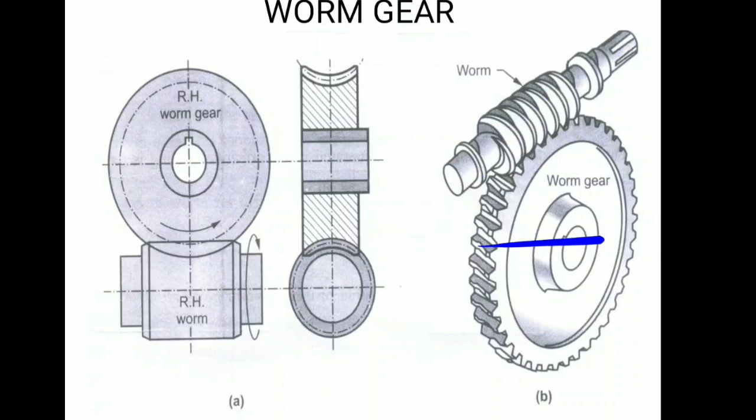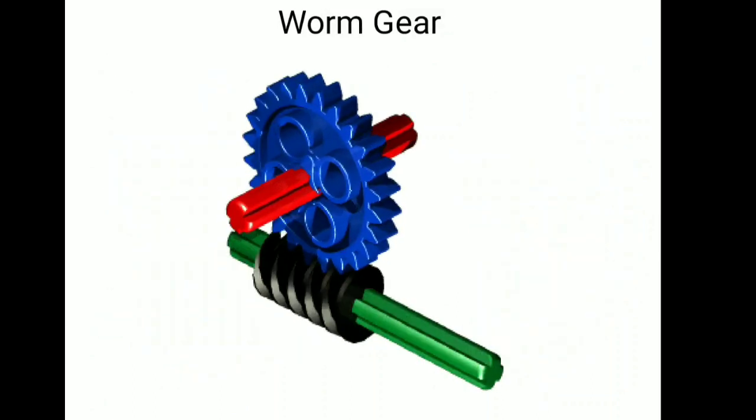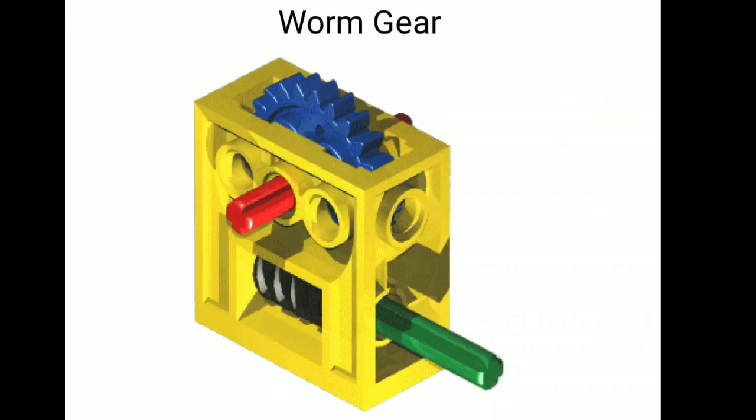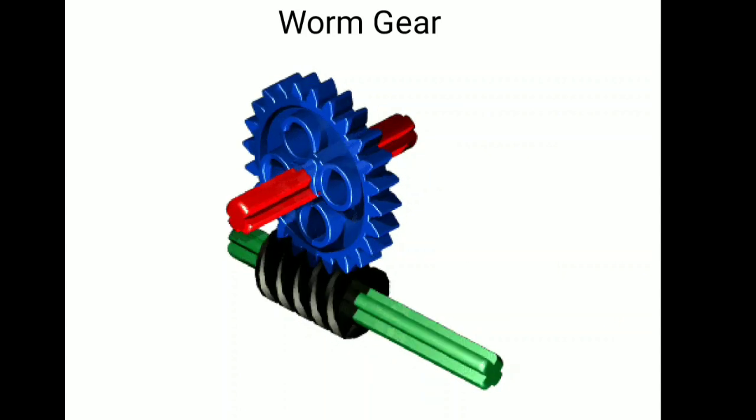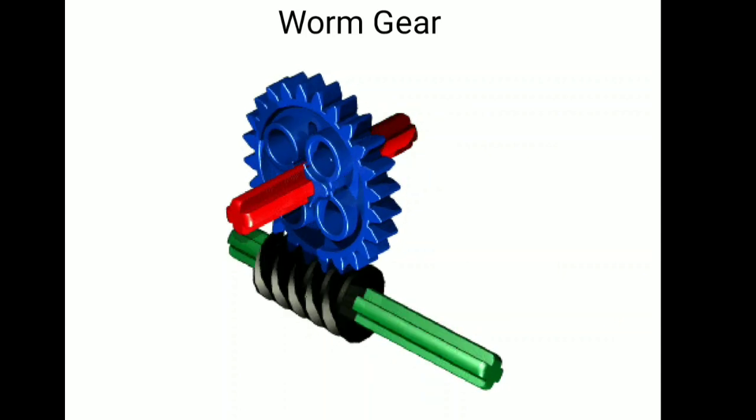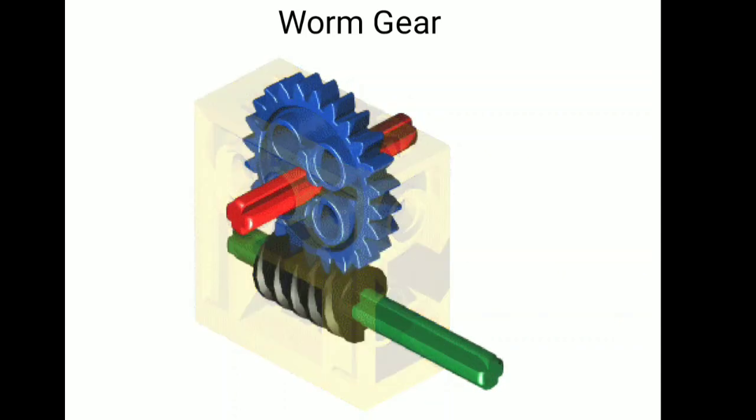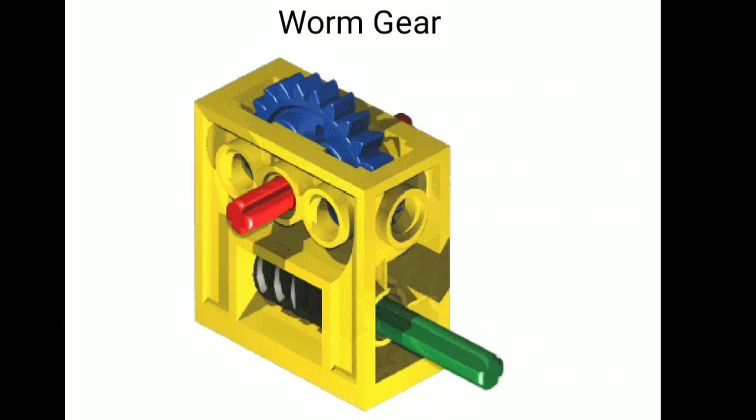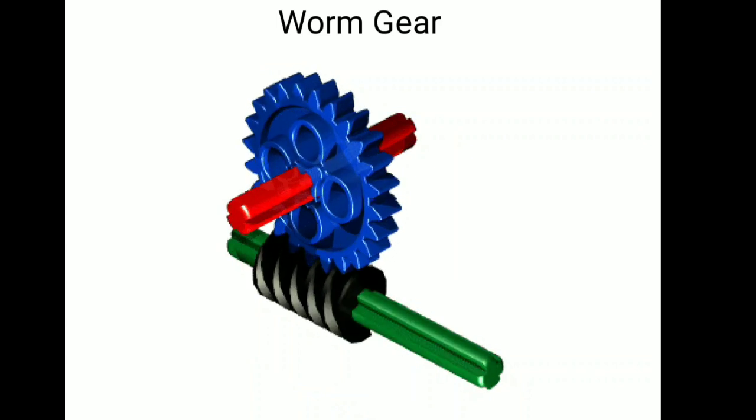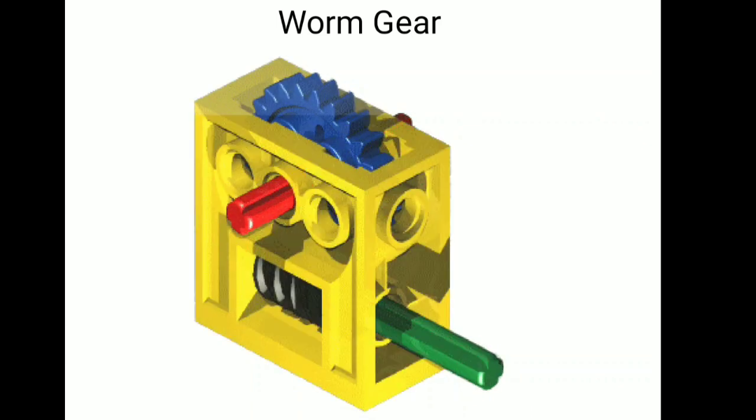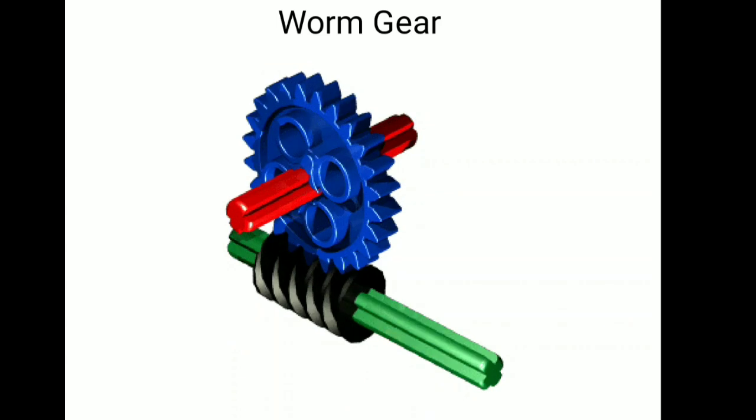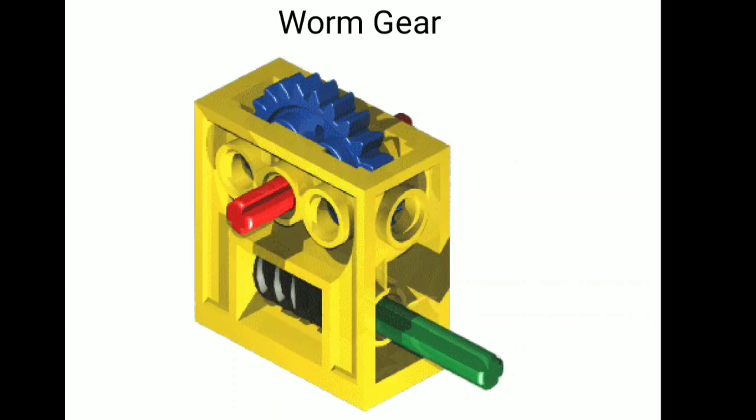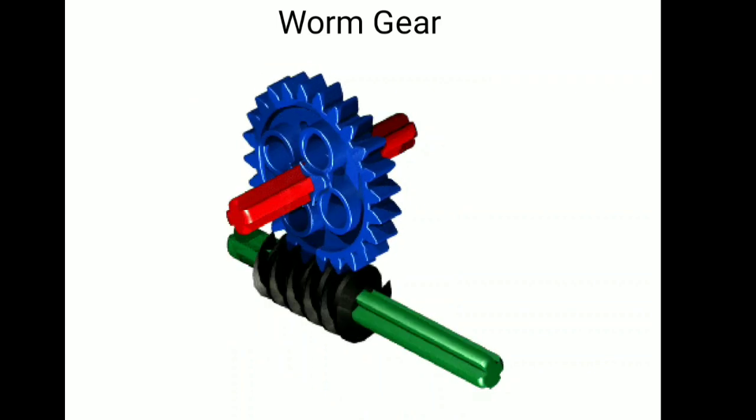Now, I will show you the animated video of the worm gear. You can see, the blue one is gear and black one is a worm. Really, it can be used for the high gear ratio. Generally, worm gear pairs are used in heavy load application such as lift cranes, in case of elevators, for opening and closing of the dam gate.